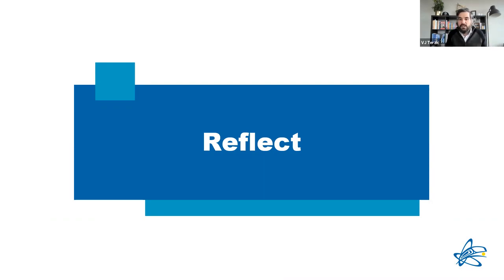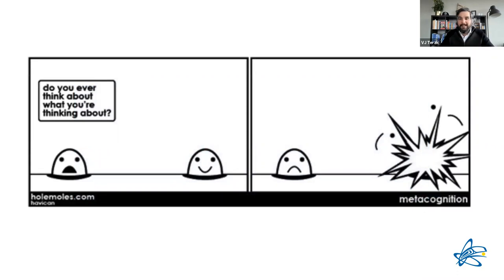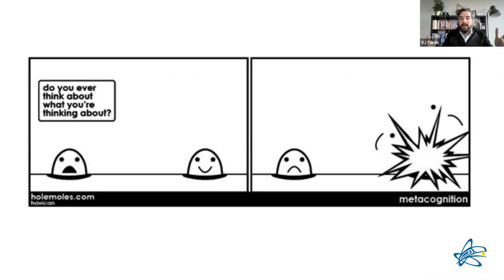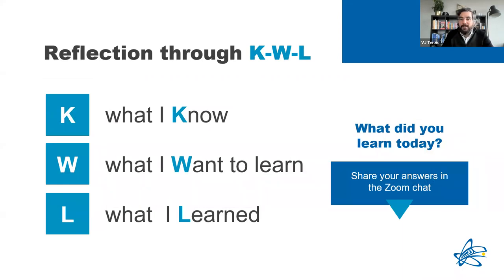Reflecting is the third and final piece — coming back to your intentions and connecting with them. Reflection allows you to check if you're on the intended path and gives you a moment to appreciate where your learning has come. We suggest the KWL format: K — what do I know? W — what do I want to learn? L — what did I learn? What is your takeaway today? What's something from this webinar that's going to stick with you?